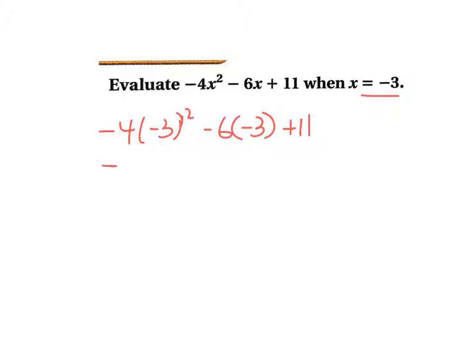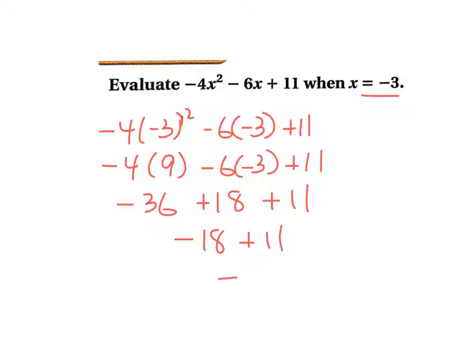So I'm going to do the negative 3 squared. Negative 3 squared is 9. Minus 6 times negative 3 plus 11. Then you do multiplication and division from left to right. So my multiplication is here. And also that's negative 6 times negative 3, which is positive 18. Going left to right, plus 11. Then I'm going to add and subtract left to right. If I add negative 36 and 18, that's negative 18 plus 11, negative 7. So make sure you've got your order of operations there. Not very difficult. So you just plug in the number for the variable.